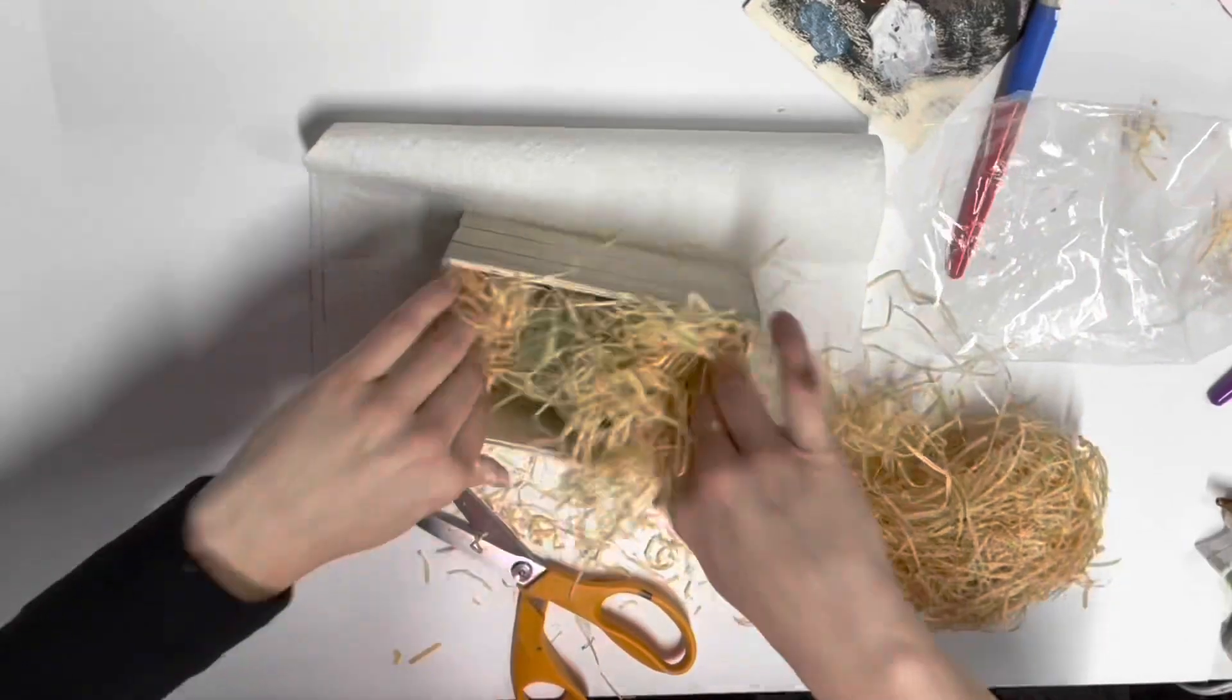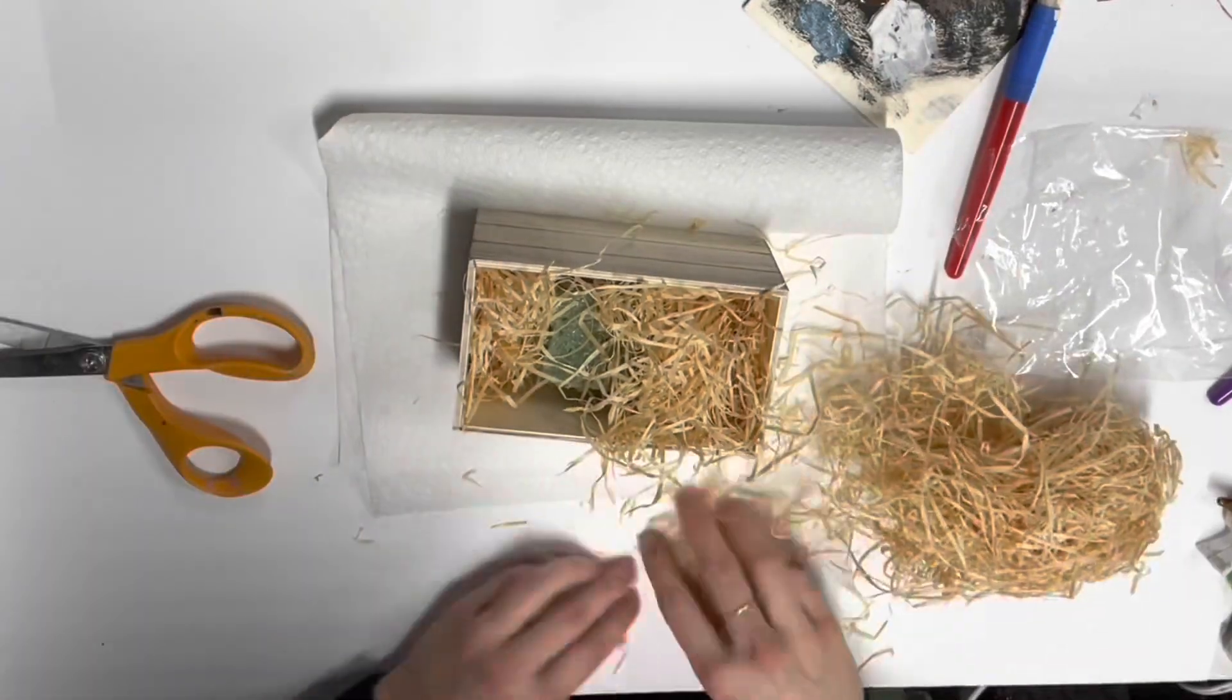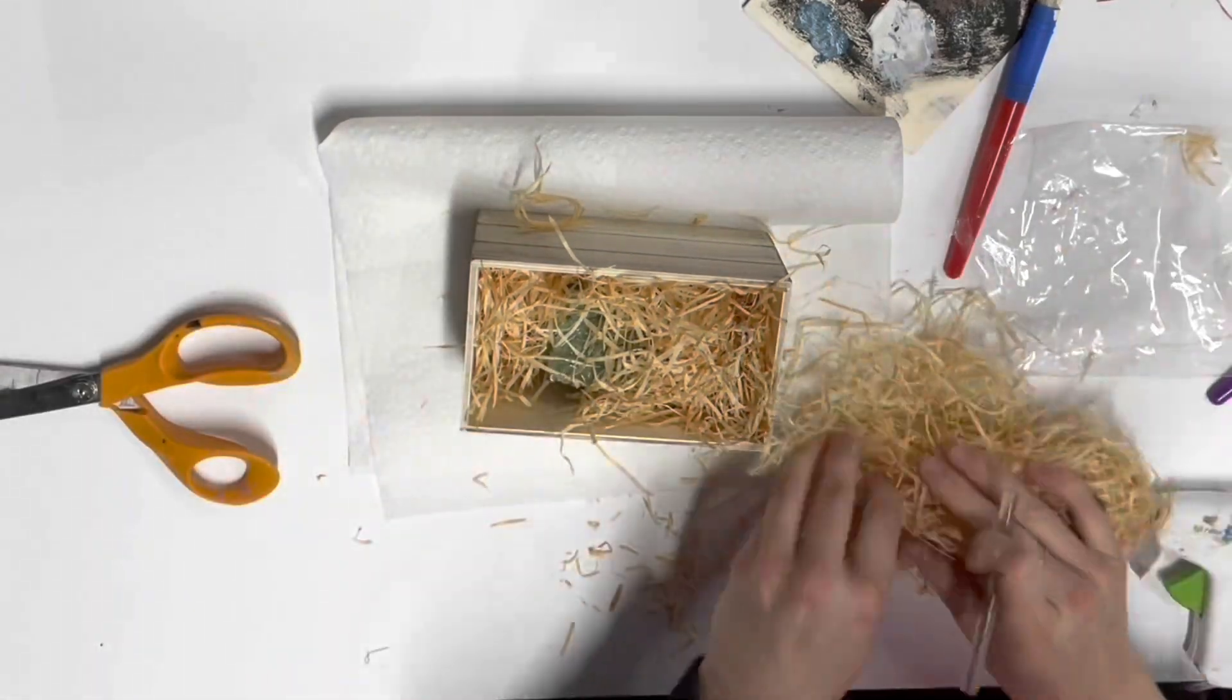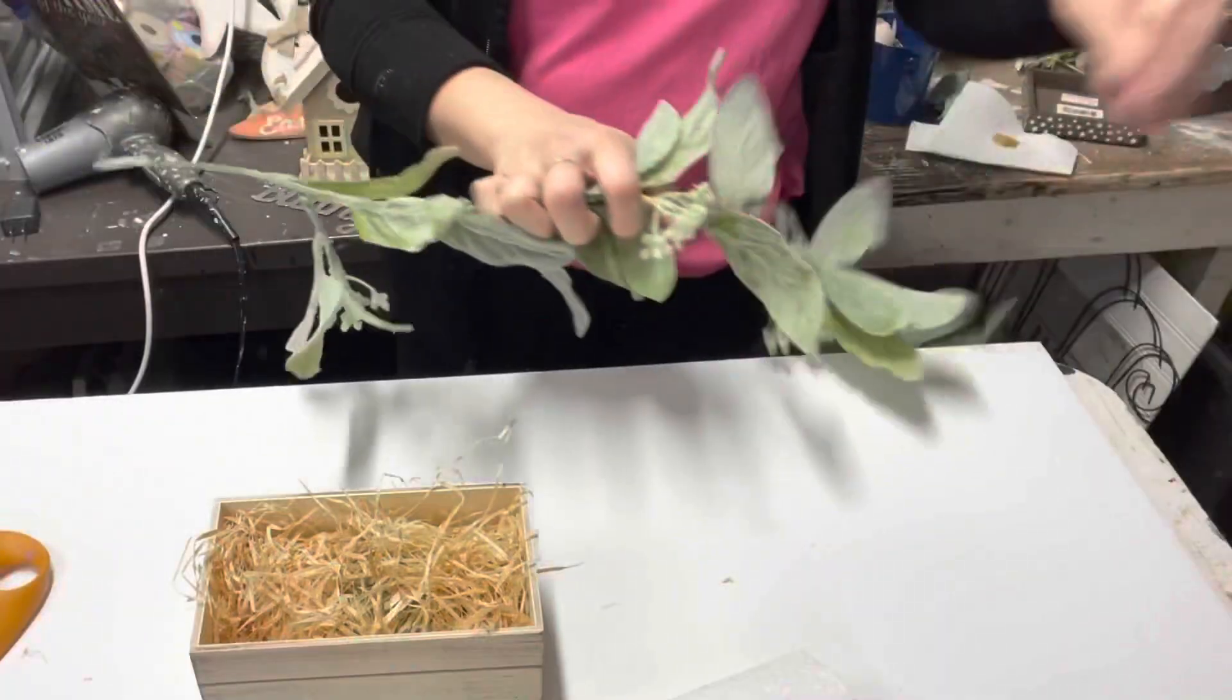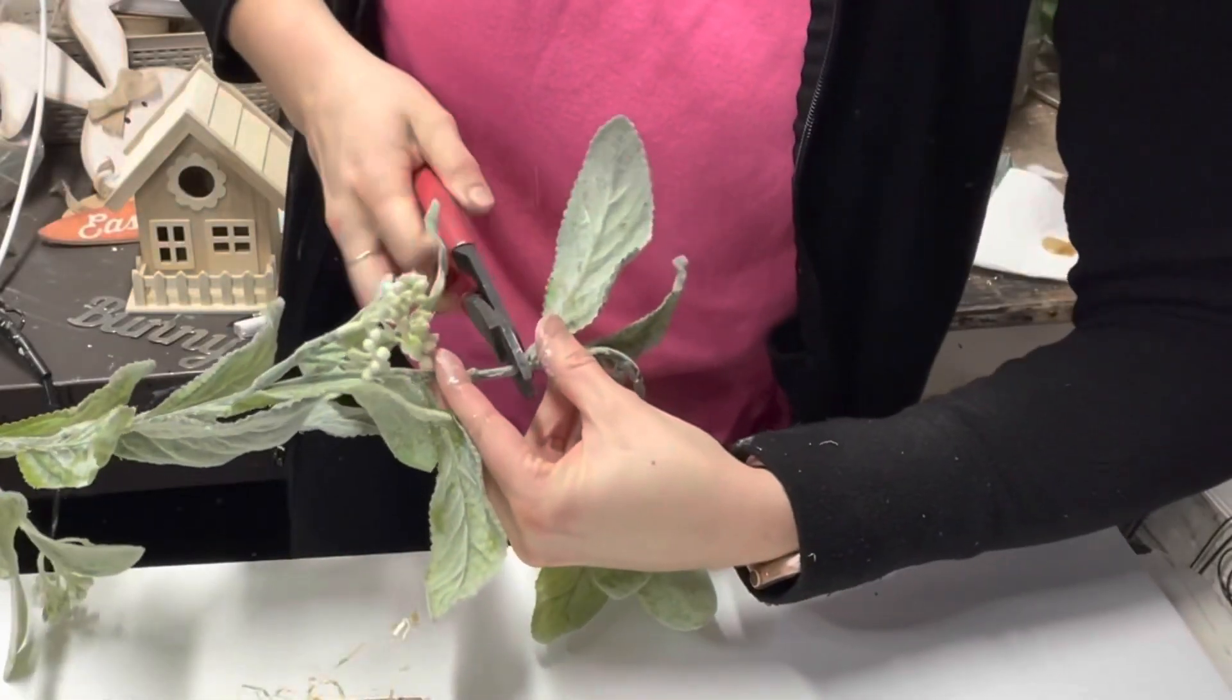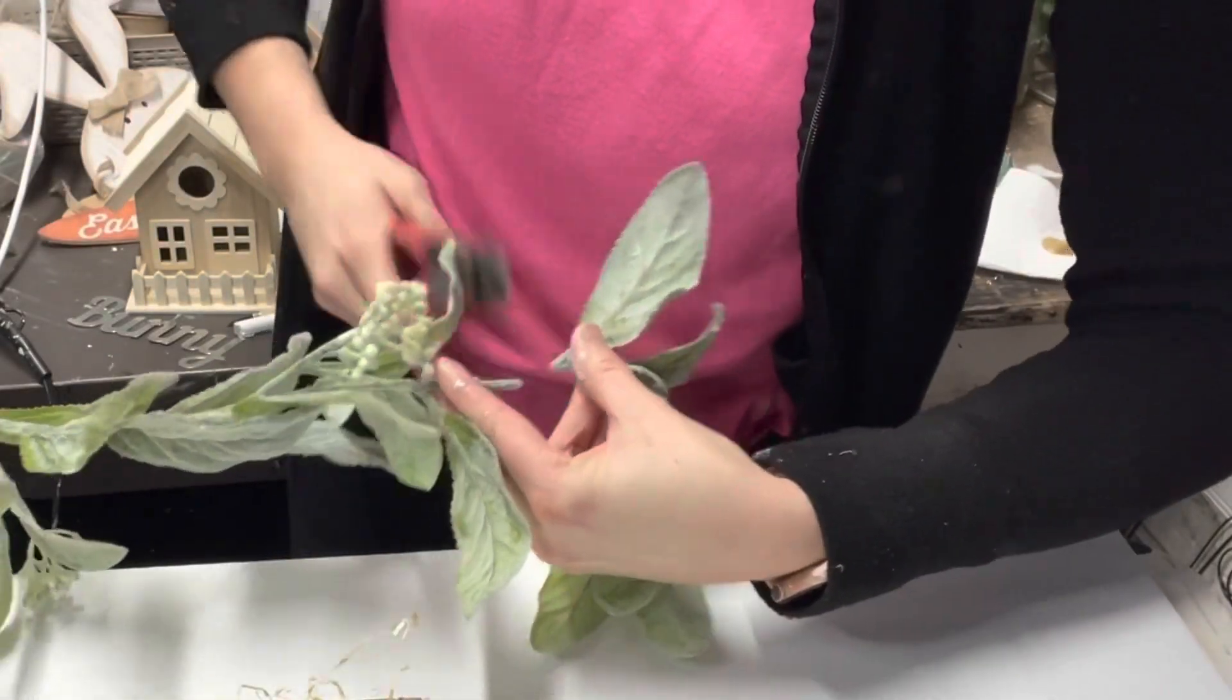So I went ahead and already gave that one away for you guys. Anyway, I just made this little flower arrangement. I just went ahead and used some of that little straw looking stuff in the bottom. And then I had this piece of greenery, this long strand of garland. So I just went ahead and cut it up.